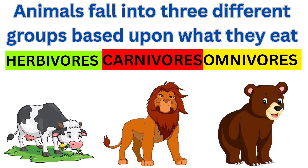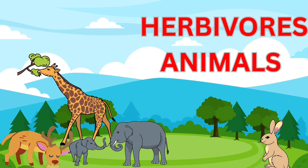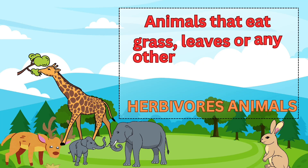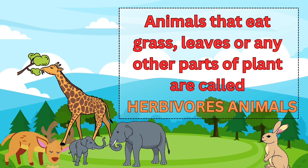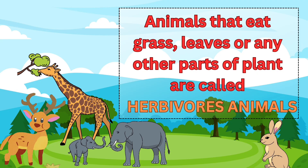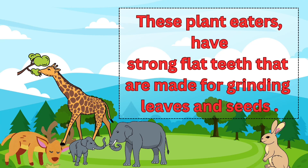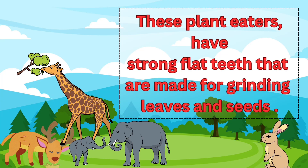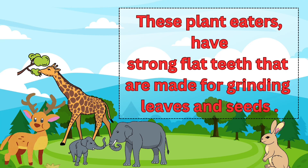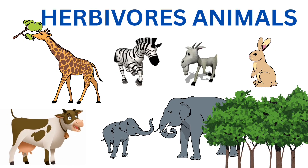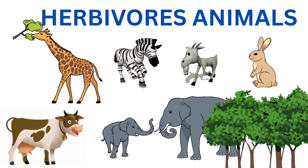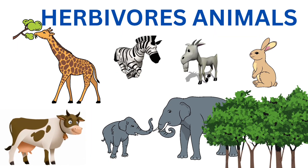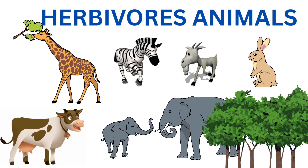Starting with herbivores — animals that eat grass, leaves, or any other part of a plant are called plant-eating animals or herbivores. These plant eaters have strong and flat teeth that are made for grinding leaves and plant seeds. Zebra, giraffe, elephant, goat, cow, and rabbit are a few examples of herbivore animals.